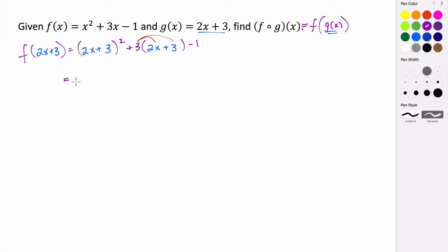So we get 2x plus 3 times the quantity 2x plus 3 plus, so 3 times 2x, that's 6x. 3 times 3, that's 9, so plus 9, minus 1.